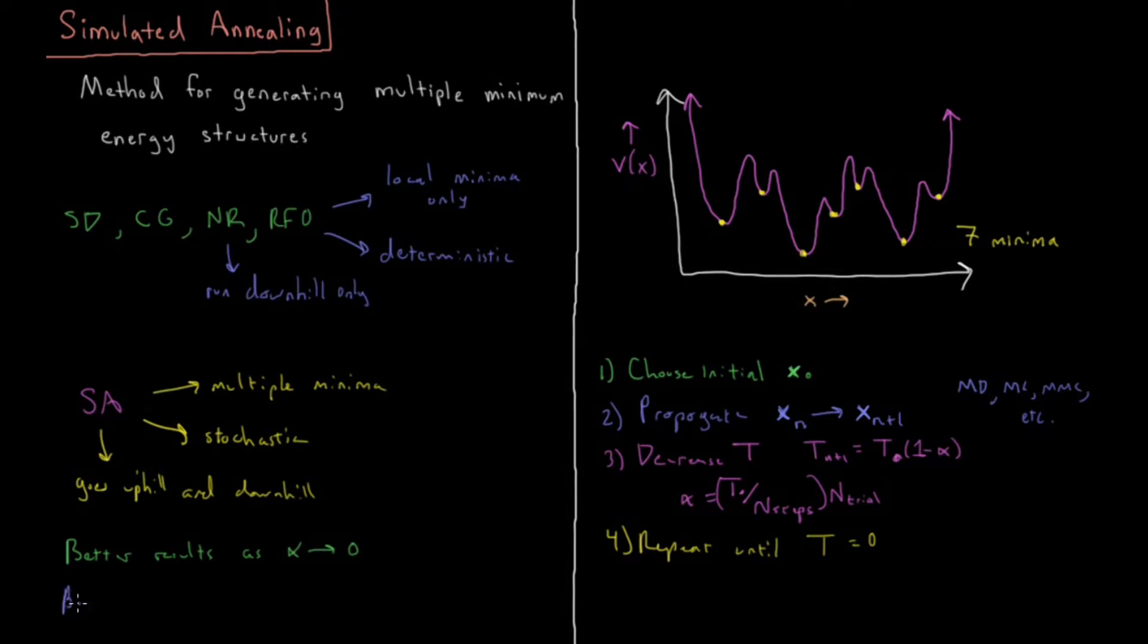And you also get better results as T_0 approaches infinity. So if T_0 starts very high, you can get over a lot of those humps and you can sample a lot of the space before the energy gets very low.